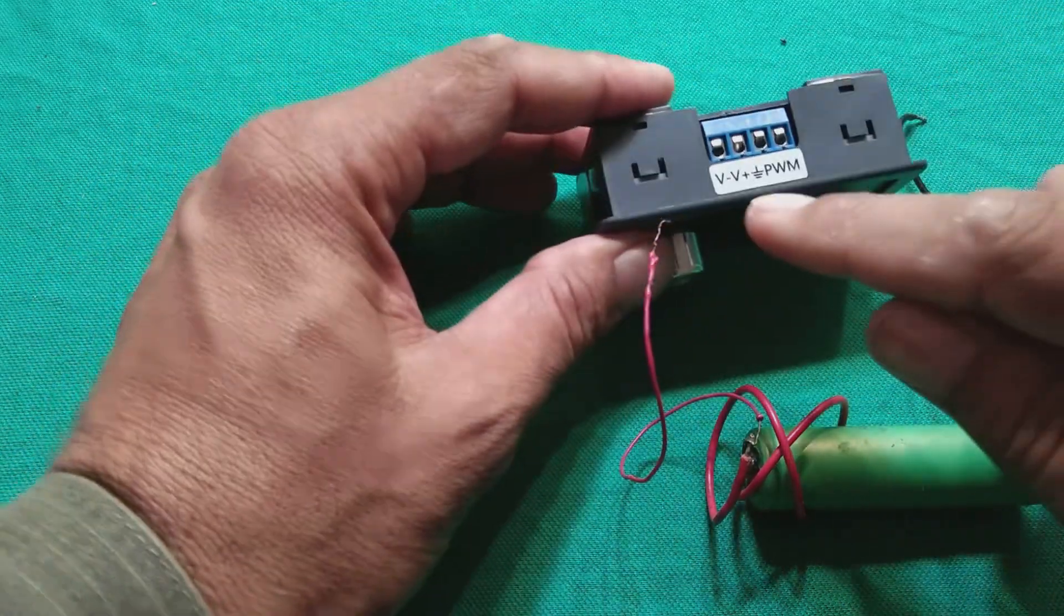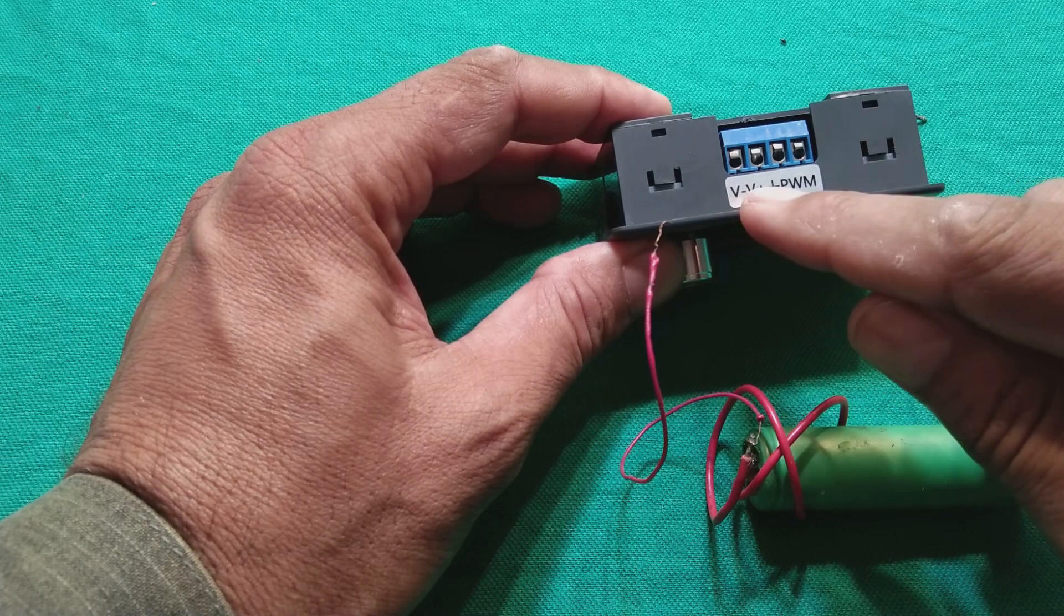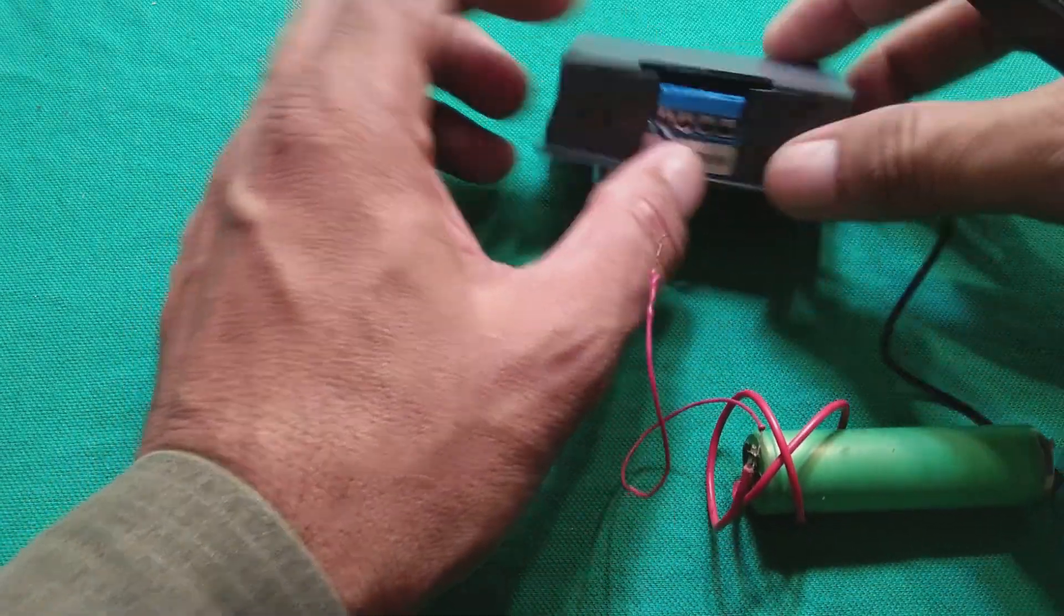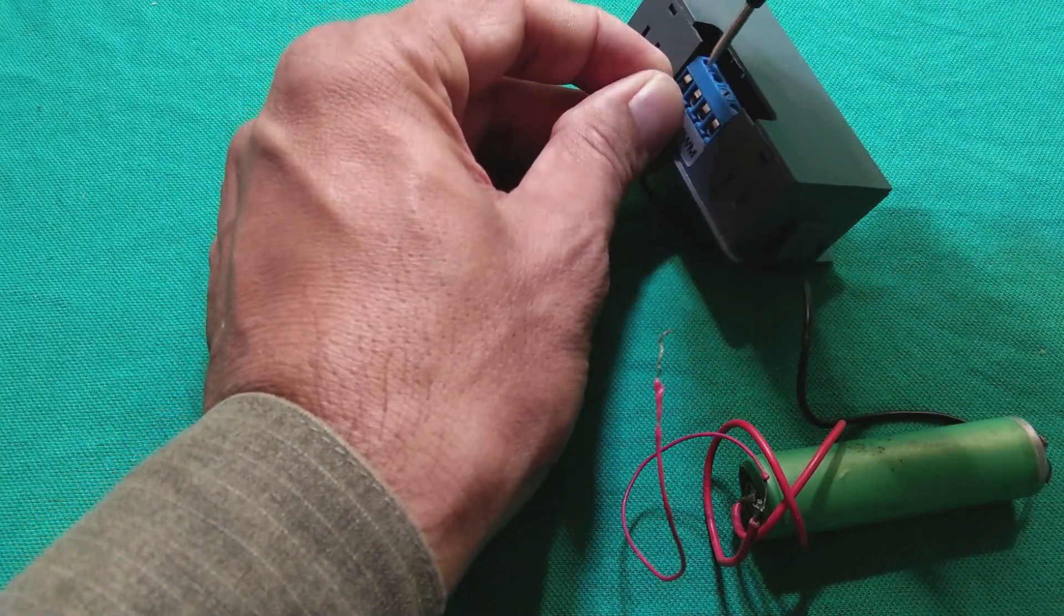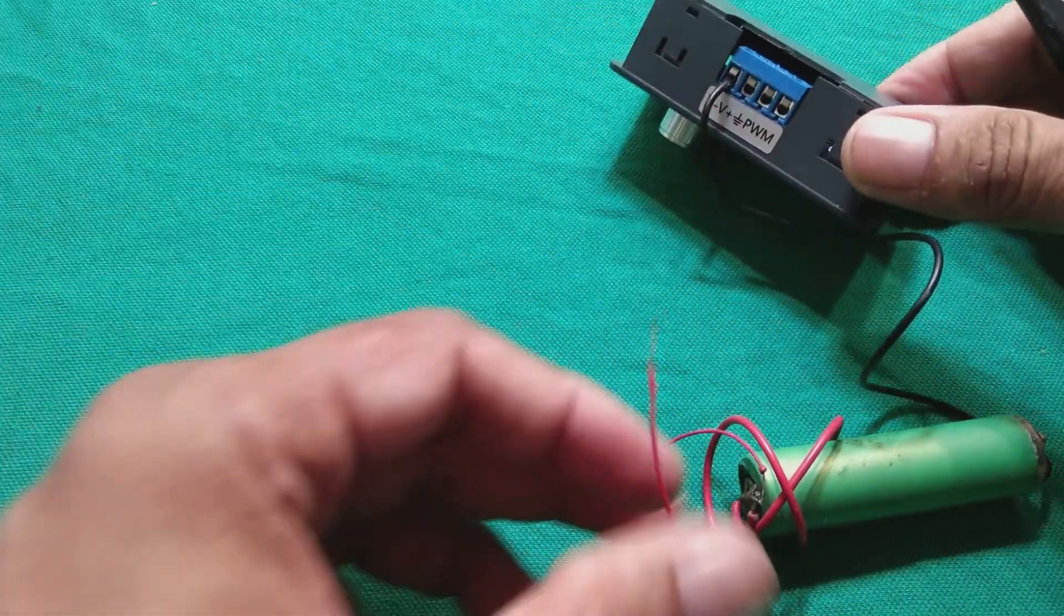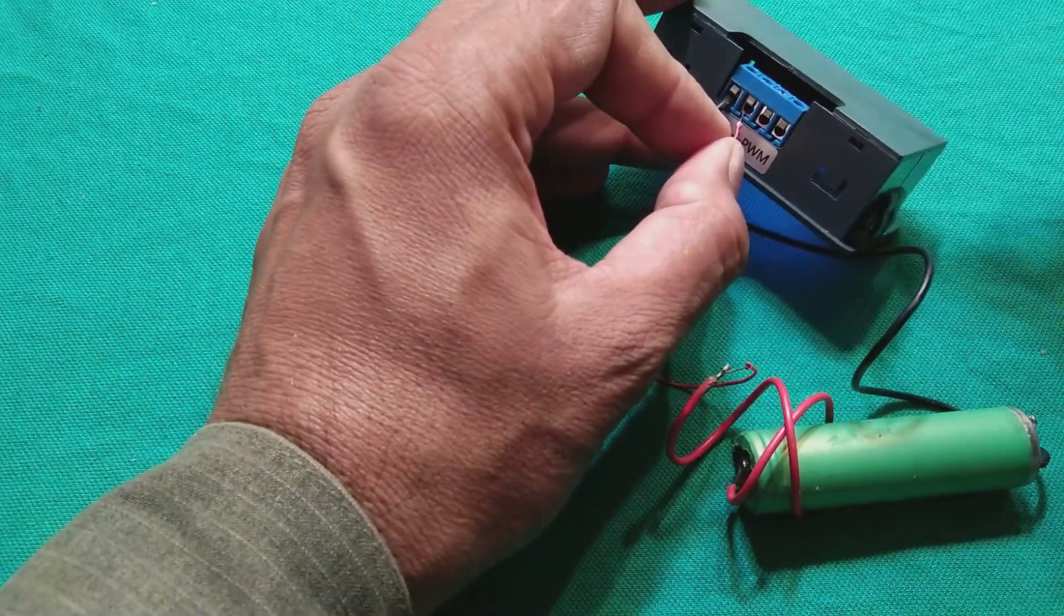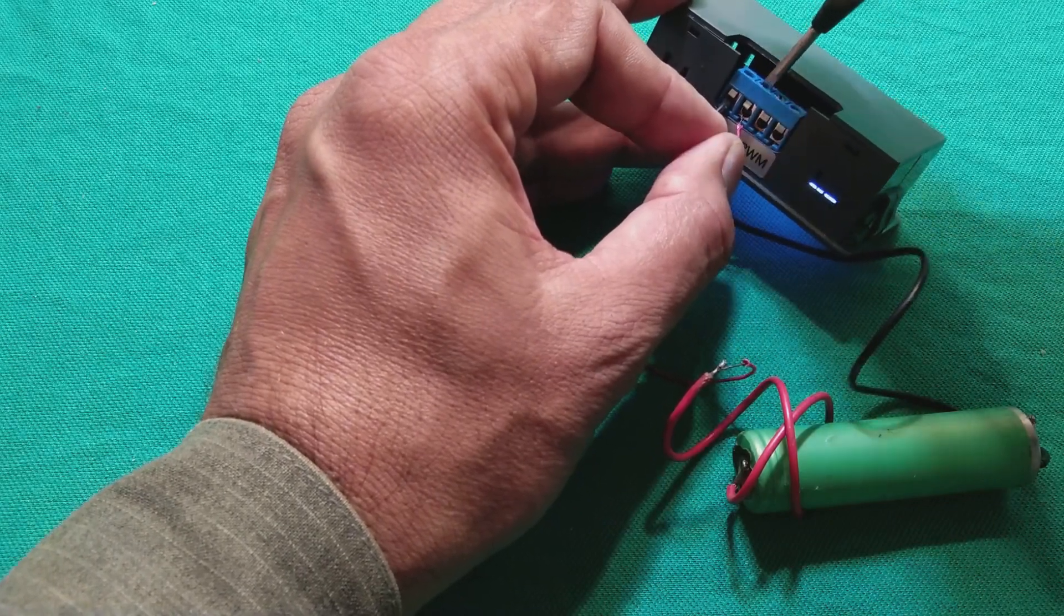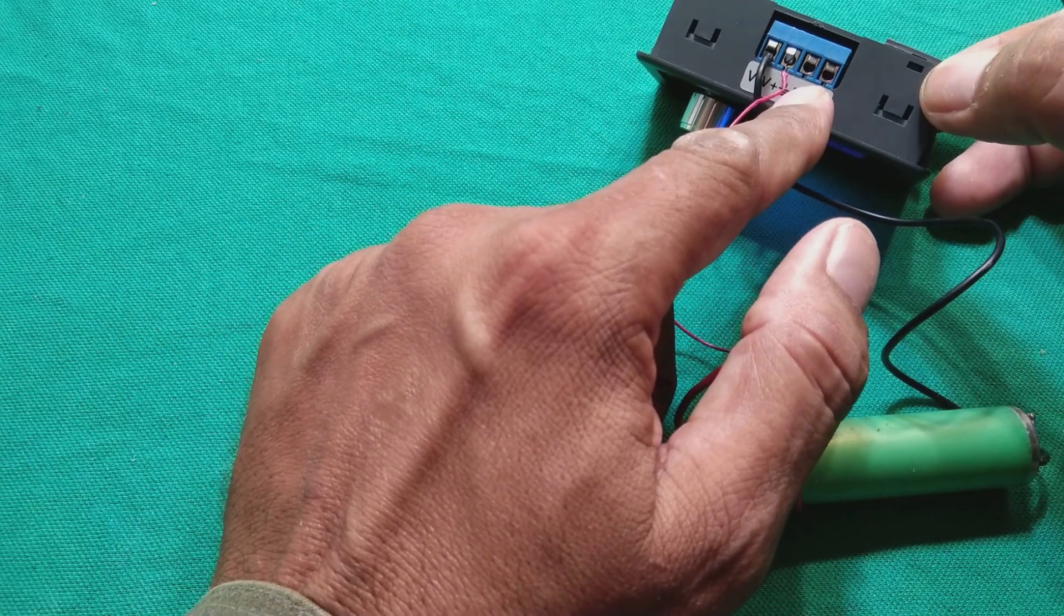There are the terminals, you can see. This is V minus and V plus. V minus is negative and V plus is positive. I'm going to connect first the negative one, this black one. I'm going to connect it using a small screwdriver like this. And then the positive one we will connect over here on the V positive. So here this has been connected.